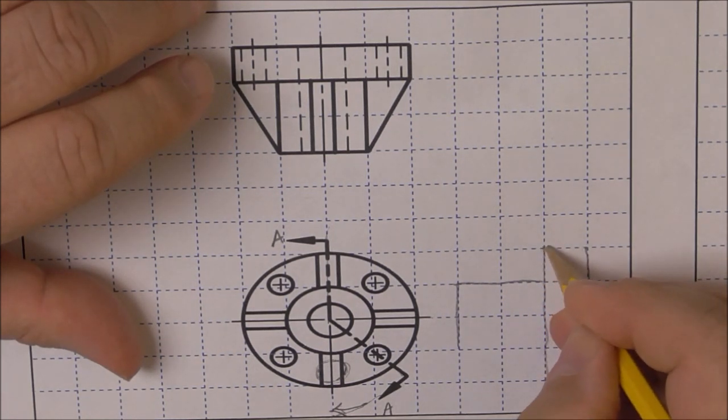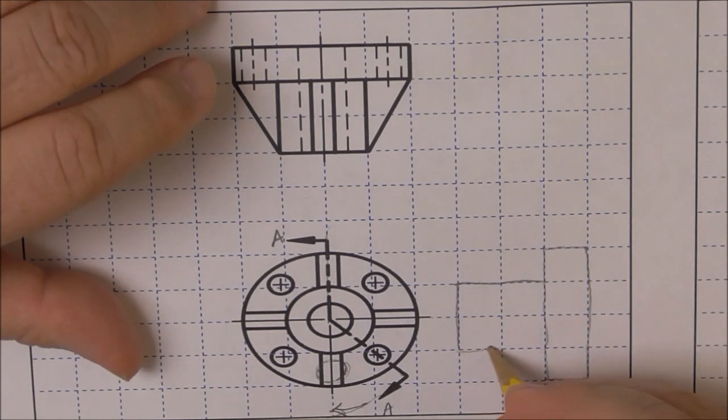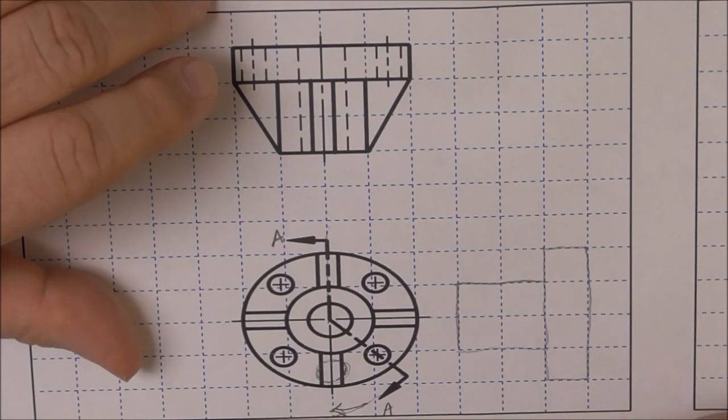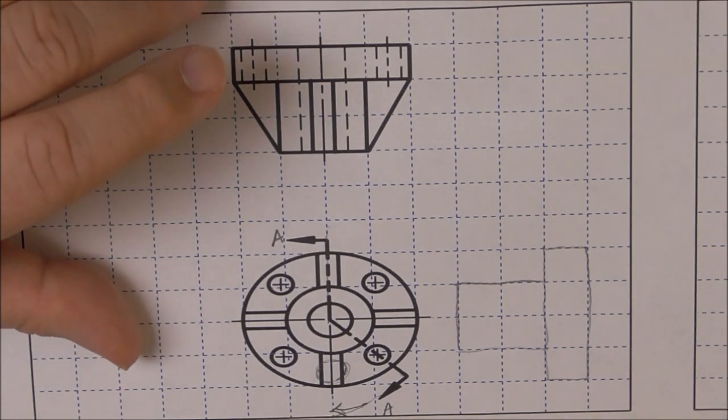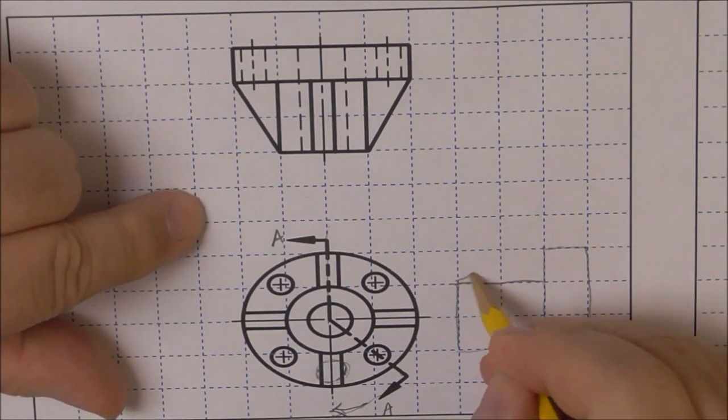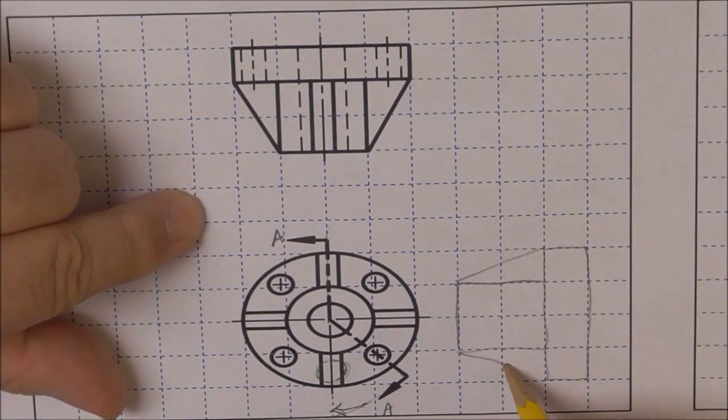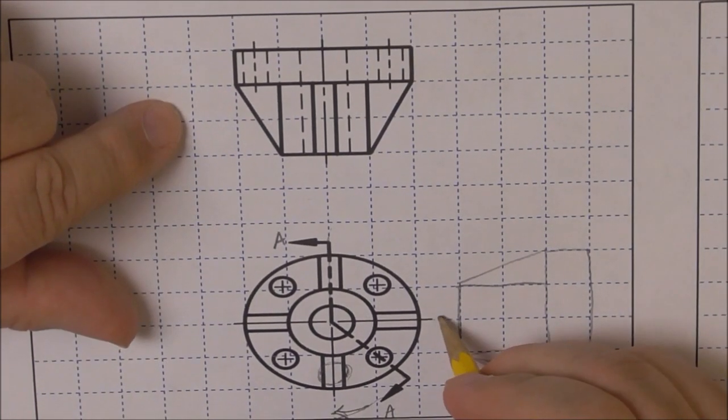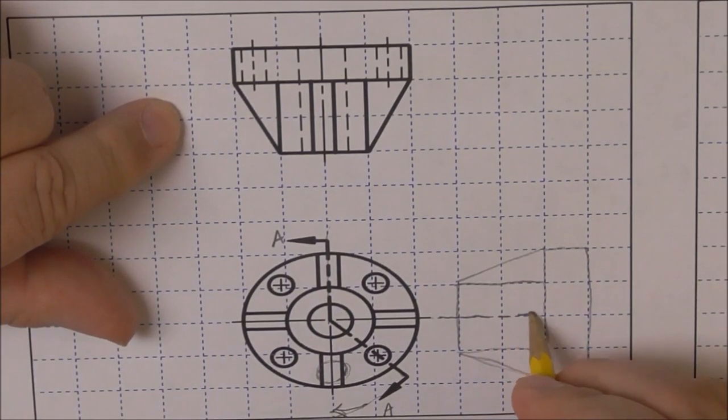Draw your normal view. This would be a right side to begin with, then we're going to change it into a section view.